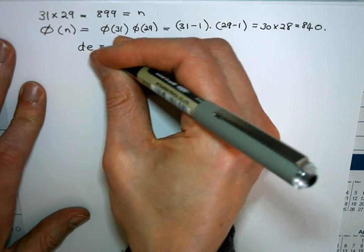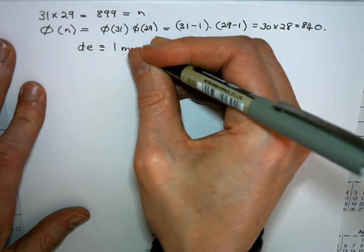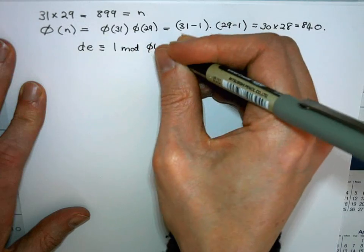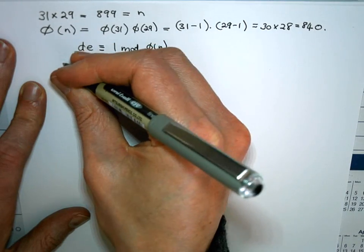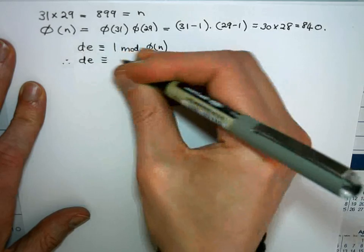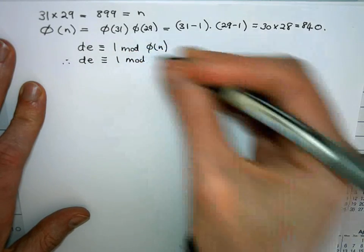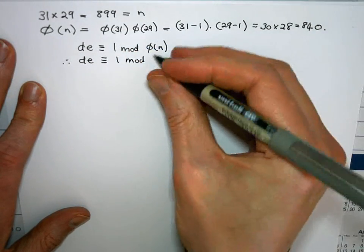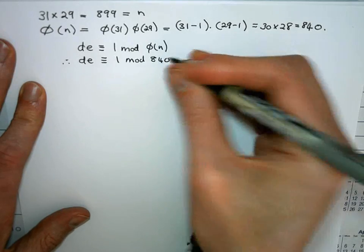d times e needs to be congruent to 1 modulo φ(n). So in other words d times e needs to be congruent to 1 modulo, φ(n) in this case is 840.